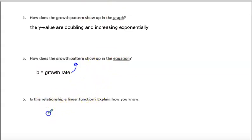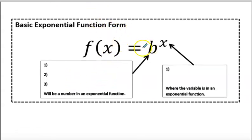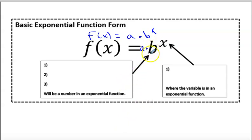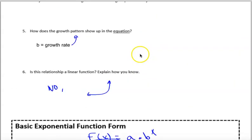How does the growth pattern show up in the equation? The growth pattern is the b value — b equals the growth pattern, or we can call it the growth rate. And is the relationship linear? No — we can simply see from the graph that it shoots up exponentially. So the equation is f(x) = a · bˣ: a is my y-intercept, b is the growth factor which is what the y-values multiply by each time, and x is the input while f(x) is the output.